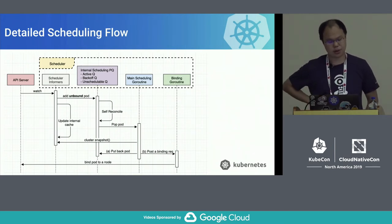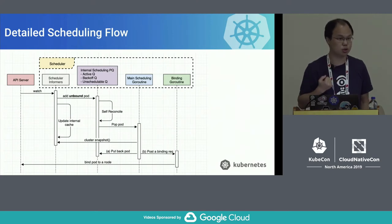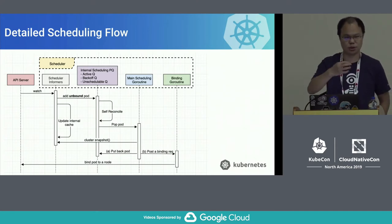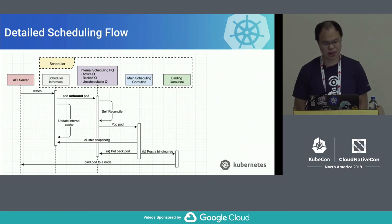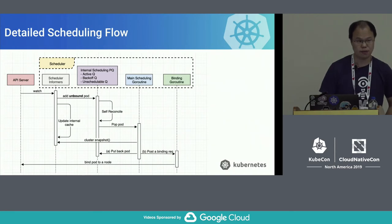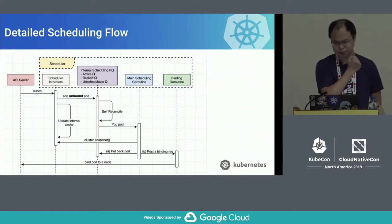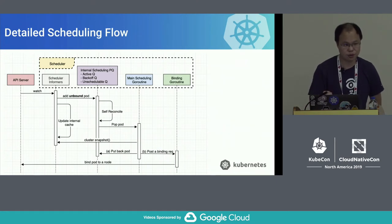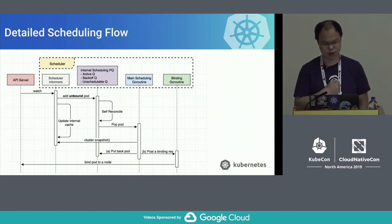In the scheduler, the informer does two things: one is to update its internal cache, so we don't query the API server every time we need to make a scheduling decision. We rely on this internal cache because scheduling is a high-volume operation. The second thing it does is build specific data structures. Unlike a typical CRD controller that uses a work queue, the scheduler needs to make decisions very efficiently and relies on specialized data structures to do so.